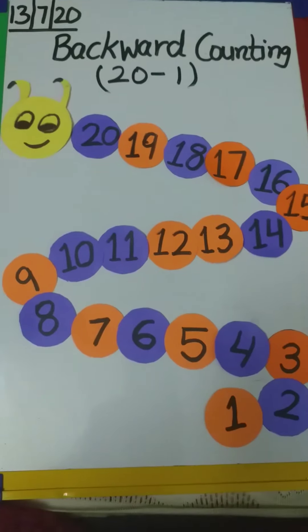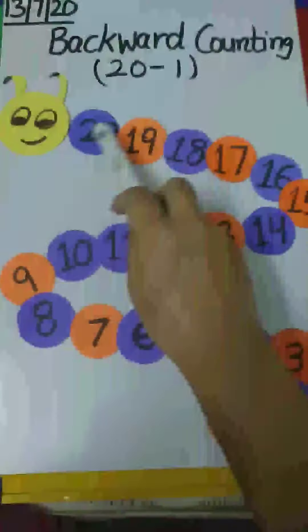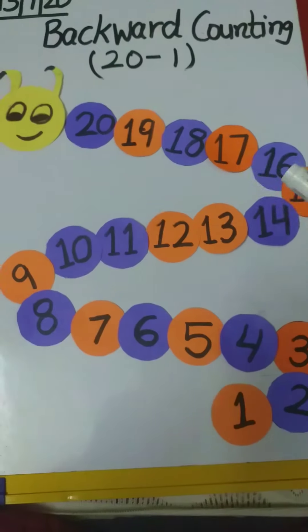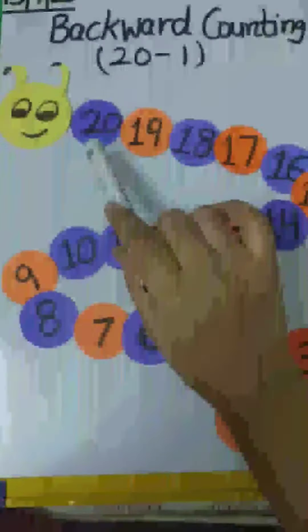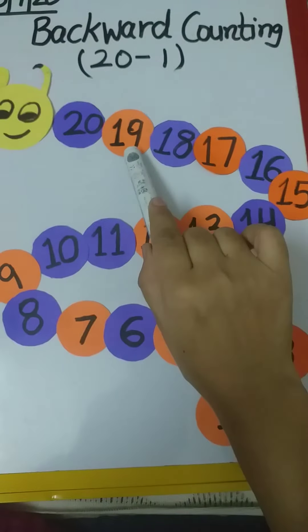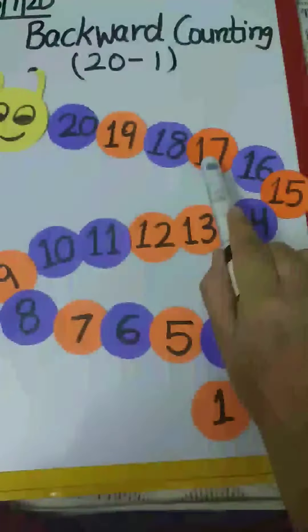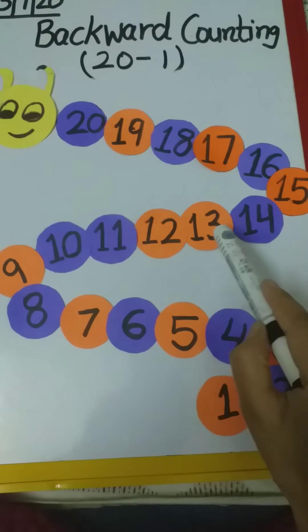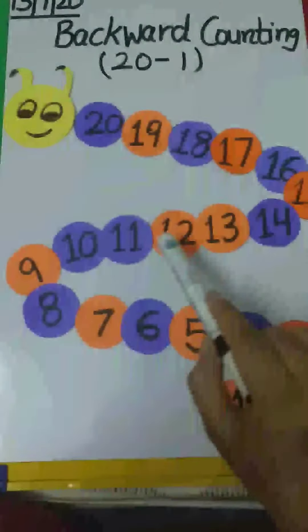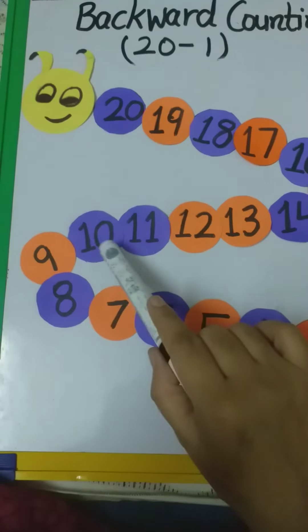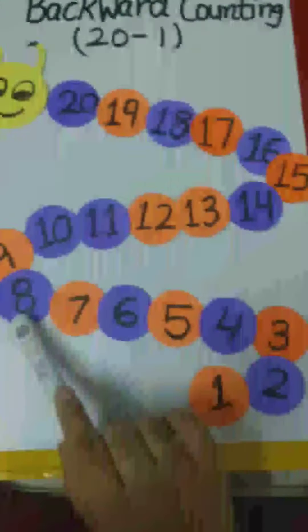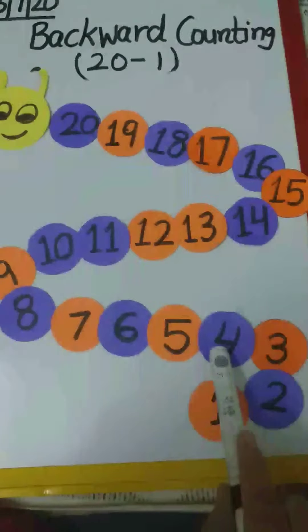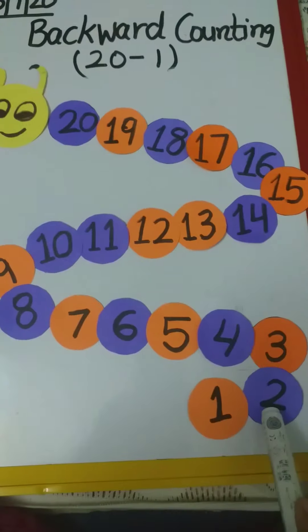So children, remember, when we do backward counting, we ask what comes before. Let's revise it again. 20, 19, 18, 17, 16, 15, 14, 13, 12, 11, 10, 9, 8, 7, 6, 5, 4, 3, 2, 1.